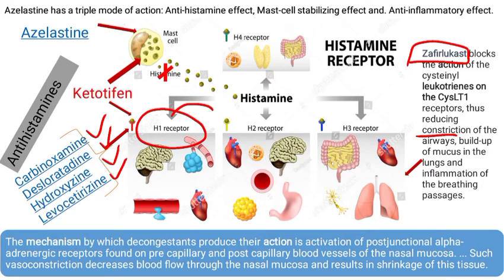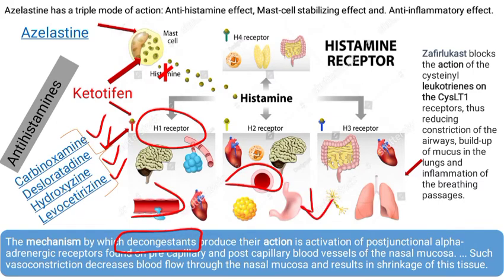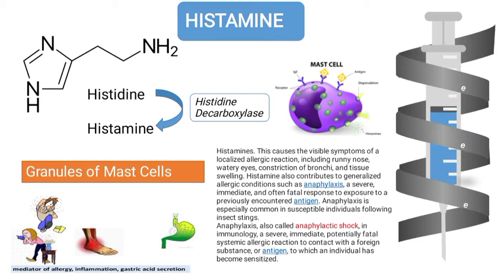From the leukotriene class, zafirlukast blocks the activation of cysteinyl leukotrienes on the CysLT1 receptors, thus reducing constriction of the airways, buildup of mucus in the lungs, and inflammation of the breathing passages. For decongestants, the mechanism involves activation of post-junctional alpha-adrenergic receptors on pre-capillary and post-capillary blood vessels of the nasal mucosa; such vasoconstriction decreases blood flow and results in shrinkage of nasal tissue.